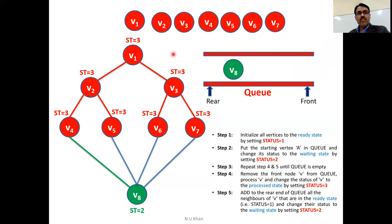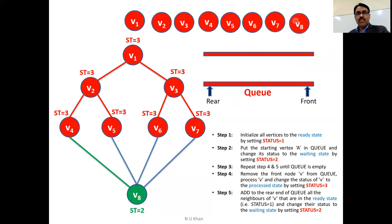So layer by layer: level one — V1; level two — V2, V3; level three — V4, V5, V6, V7. Now according to step five, add to the rear end of the queue all the neighbors of V7 that are in the ready state. V8 is added. Then remove the front node — visit V8. V8's neighbors V4, V5, V6, V7 are all already visited, so nothing is added. Check — queue is empty. Yes, queue is empty.